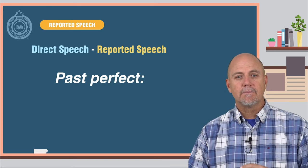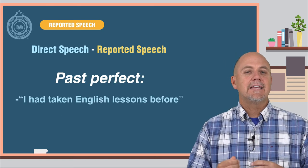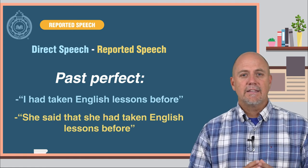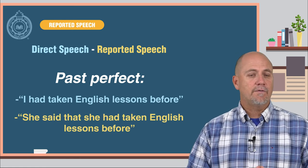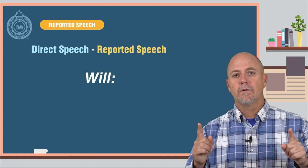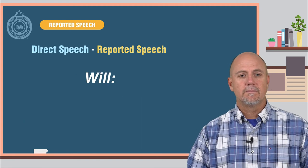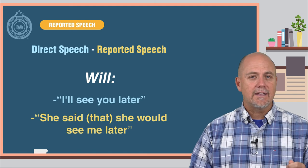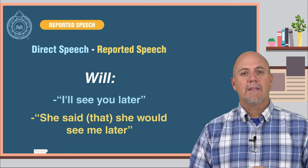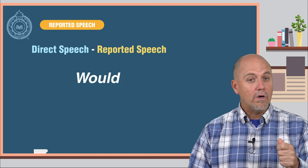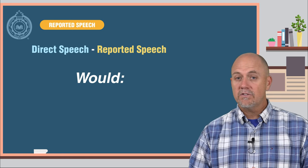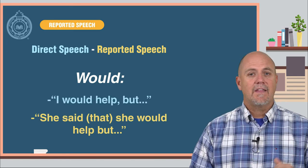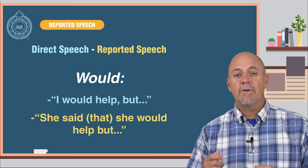Past perfect: I had taken English lessons before — she said that she had taken English lessons before. Future with will: I will see you later — she said that she would see me later. Conditional with would: I would help, but — she said that she would help, but.